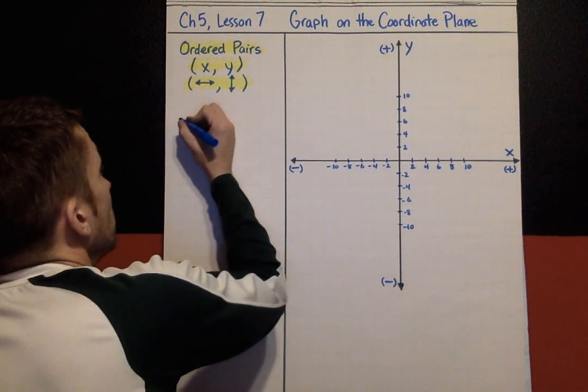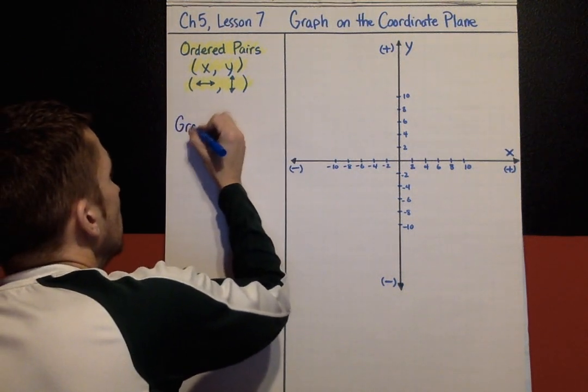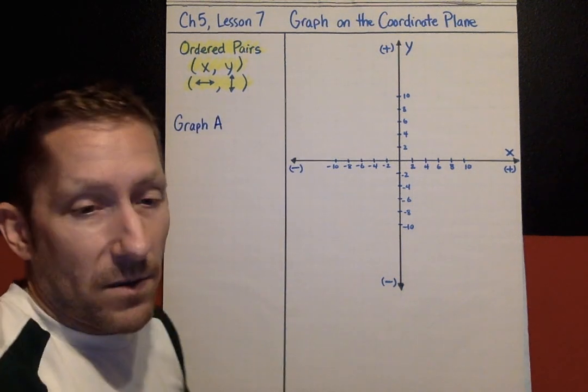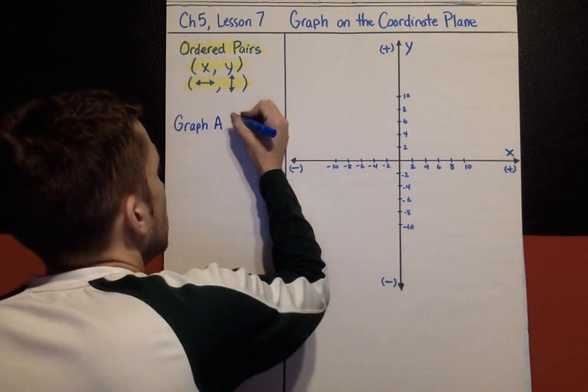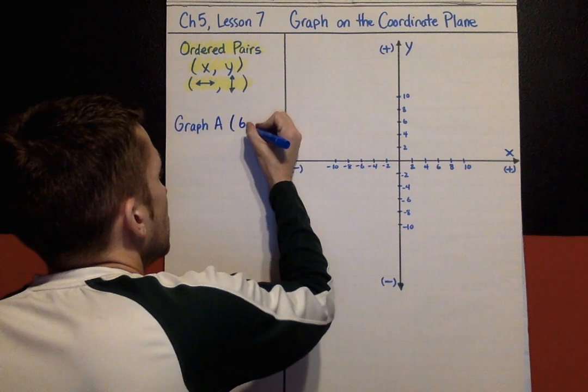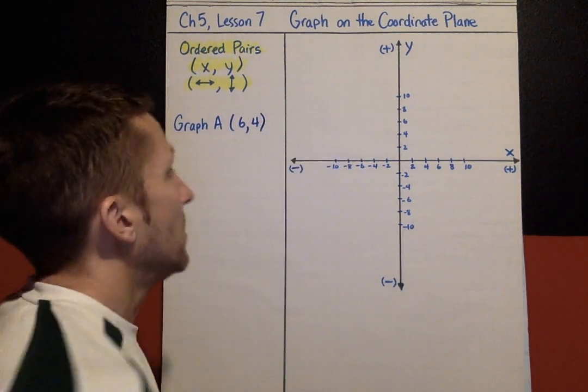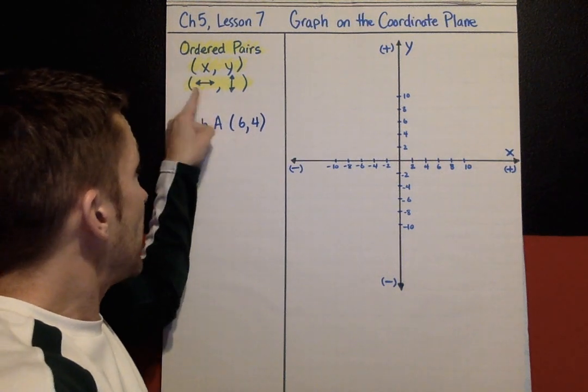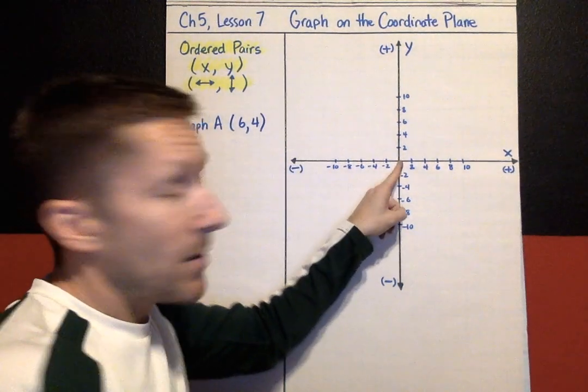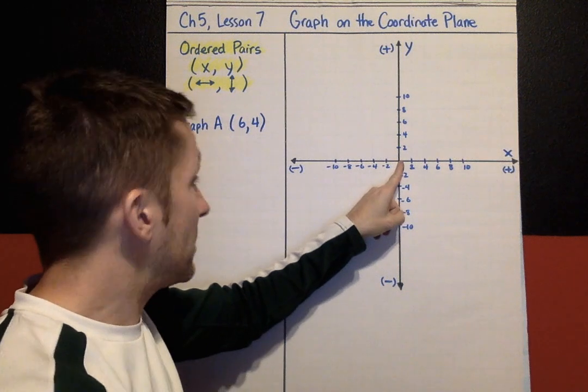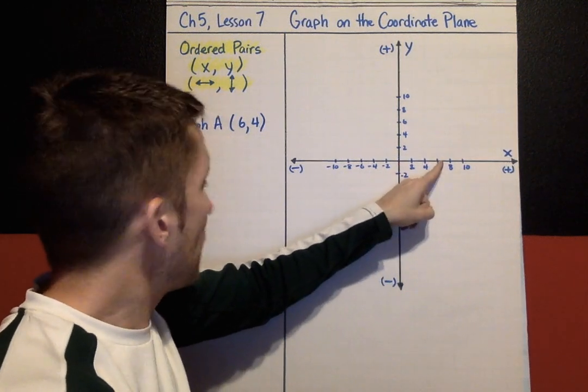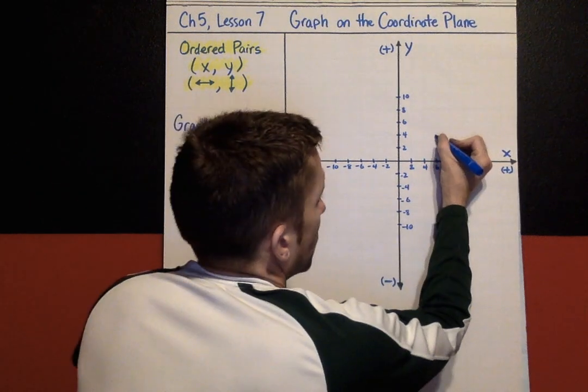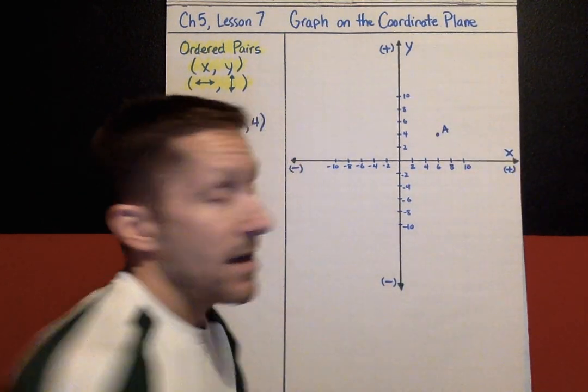The first thing we're going to do is graph the point A, and we're going to locate point A at 6, 4—x value 6, y value 4. First number, x value, tells me right or left. I always start at the origin. I'm going to go positive 6, and then my y value is positive 4. I'm going to go up to 4. That is point A.